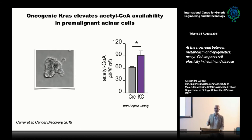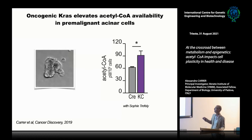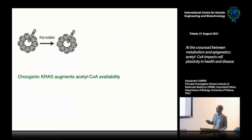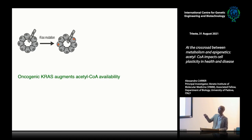This elevation in histone acetylation seems relatively specific to acinar cells in the parenchyma. To understand whether this had anything to do with acetyl-CoA metabolism, we isolated acinar cells from the mice and measured acetyl-CoA levels. We found that acinar cells expressing the mutant form of KRAS had elevated levels of acetyl-CoA.